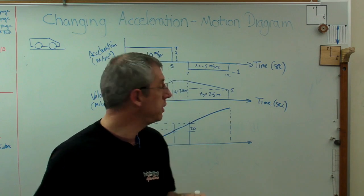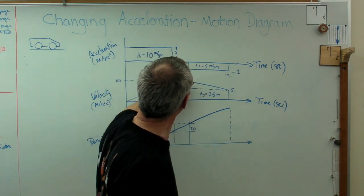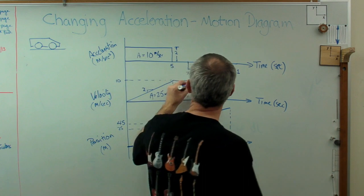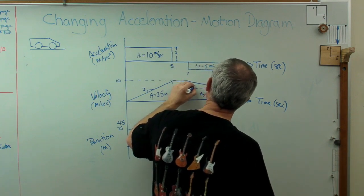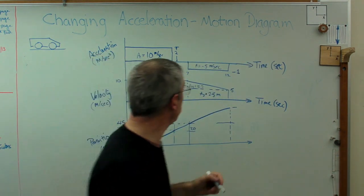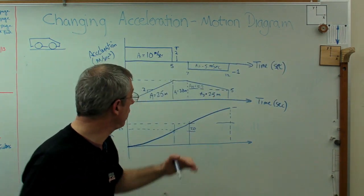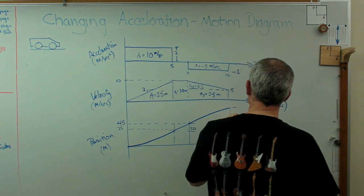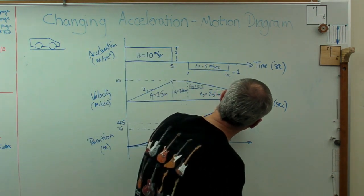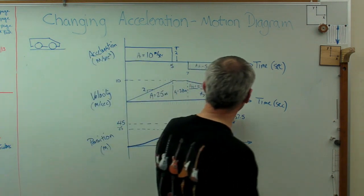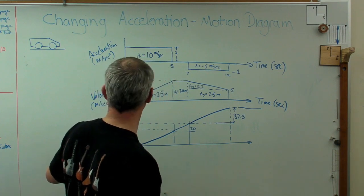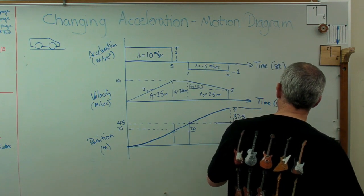For the final deceleration segment, I divide the area into two parts. The rectangular portion has base 5 and height 5 m/s, giving area A3 = 25 meters. The triangular portion has base 5 and height 5, so area = ½ × 5 × 5 = 12.5 meters. The total change in position over this segment is 25 plus 12.5 equals 37.5 meters. Adding everything up: 45 plus 37.5 gives a final position of 82.5 meters.